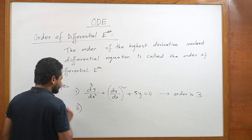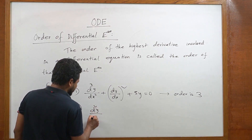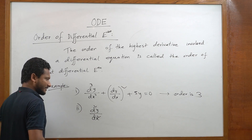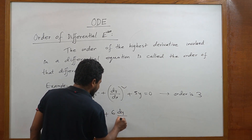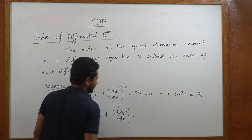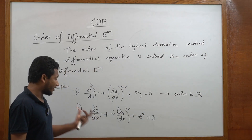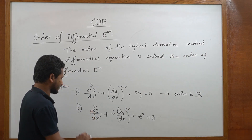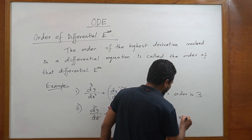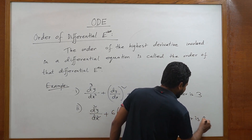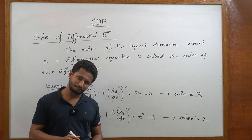Second example: d²y/dx² + 6(dy/dx)² + e^x = 0. Here, the highest derivative is the second derivative, so the order is 2.